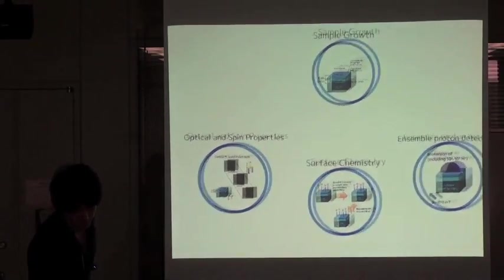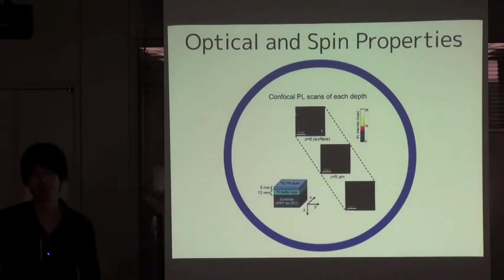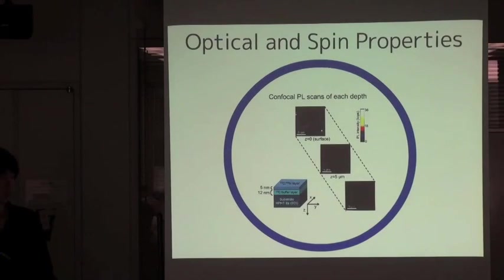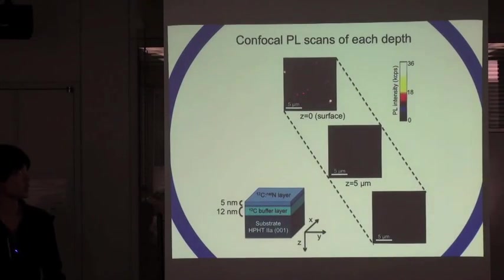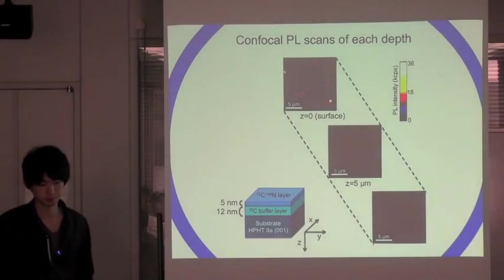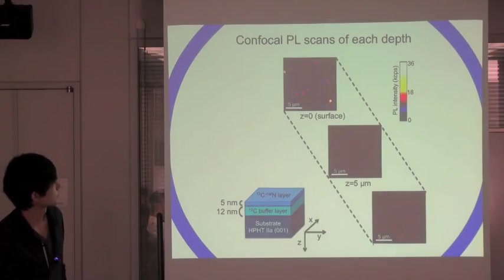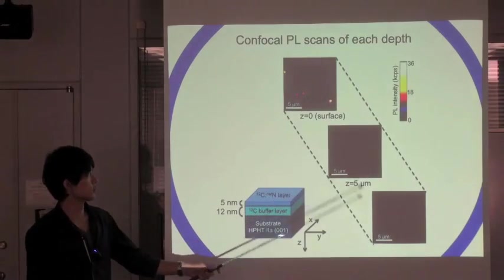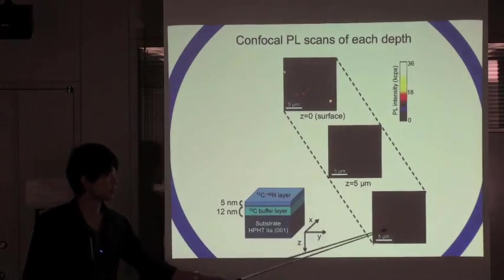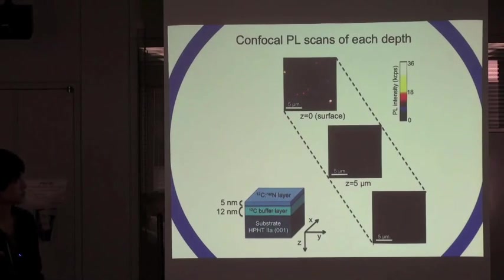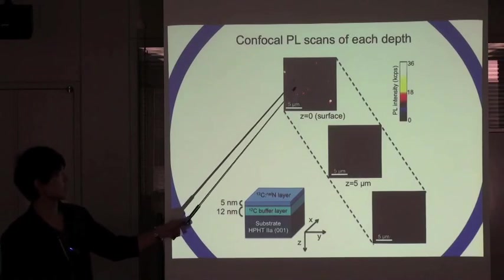Let's move on to the experimental part. We measured optical and spin properties of this sample. This is confocal photoluminescence scans of each depth at room temperature. These are XY scans at the surface, at 5 micrometer and 20 micrometer from the surface region.